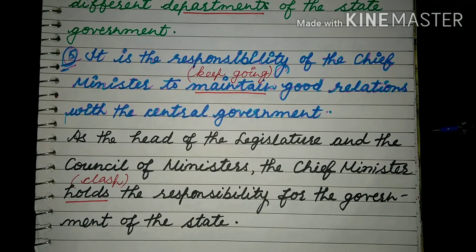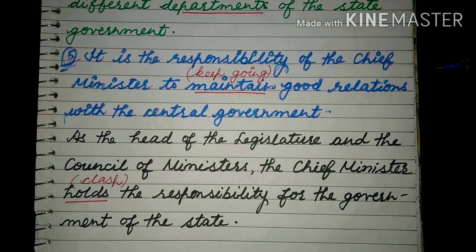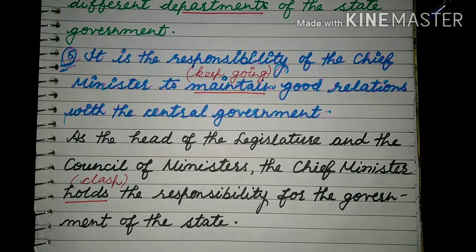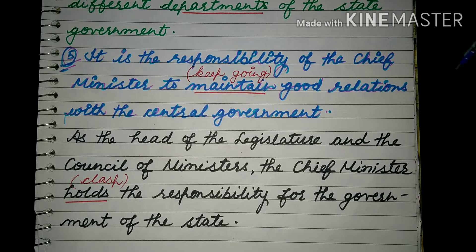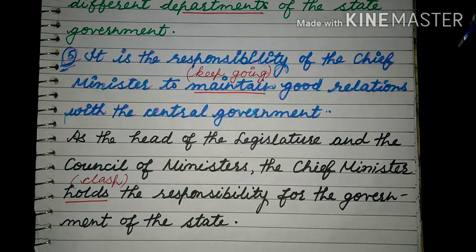As the head of the legislature and the council of ministers — क्योंकि जो chief minister होता है वो एक state का council of ministers और जो legislature, उन दोनों का ही head होता है — the chief minister holds the responsibility for the government of the state. State की जितनी भी responsibility, जितनी भी जिम्मेदारी होती है, वो उसको holds करता है, बनाए रखता है।